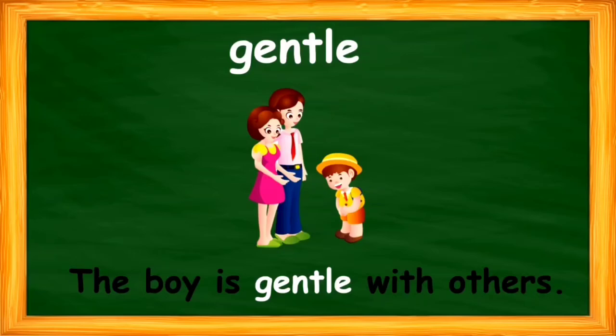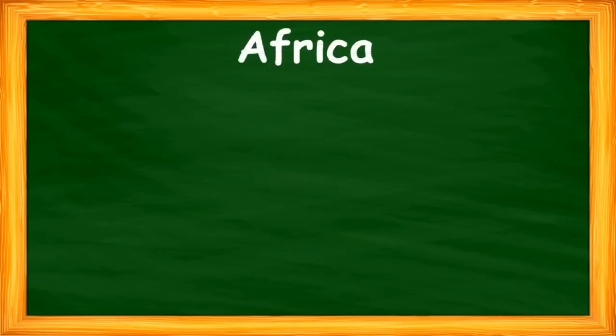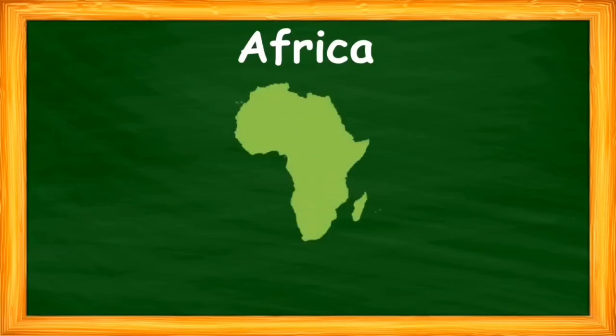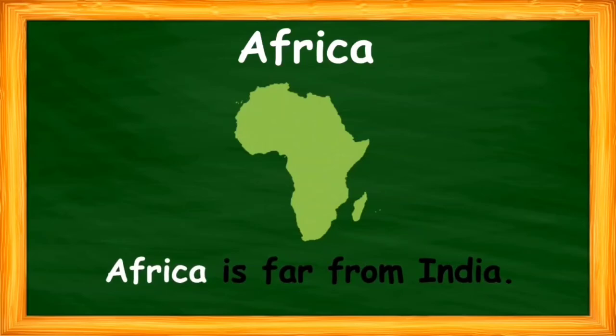The next word is 'Africa'. Look at the word — Africa is actually the name of a place, the name of a continent. I have used the word 'Africa' in a sentence like: Africa is far from India.